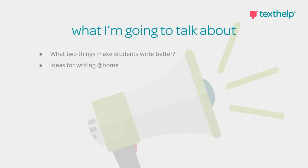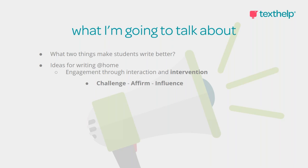I want to talk about engagement through interaction and intervention. When you talk about online writing instruction — OWI — intervention is really the biggest thing. Kids need to know that we're looking at their stuff, that we're reading it, that it means something. And when we talk about intervention, we really talk about it in these three ways: challenging, affirming, and influencing. Challenge students to do their best, affirm their effort and valuation, and then influence by showing that you care. That's the part that we get to do in the classroom every day, but don't get to do as much when they're at home. And then we'll get into a little bit about how WriQ can help teachers, both remote and in the classroom, and parents while you're at home.